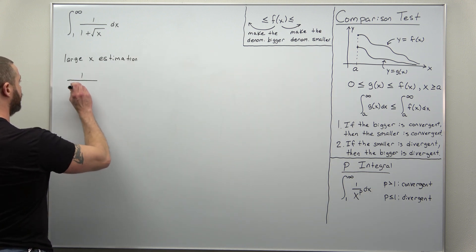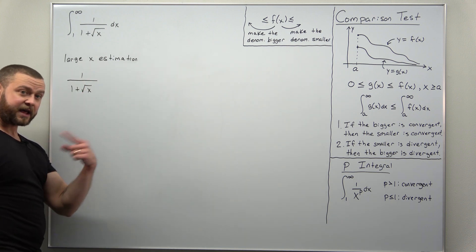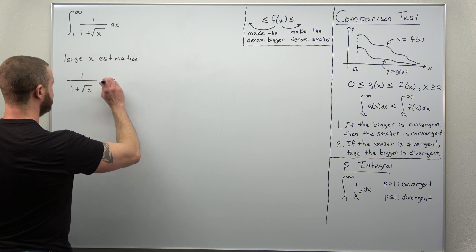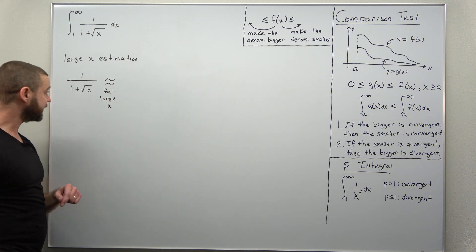We have the function 1 divided by 1 plus the square root of x. We're going to think of x being a really large number.